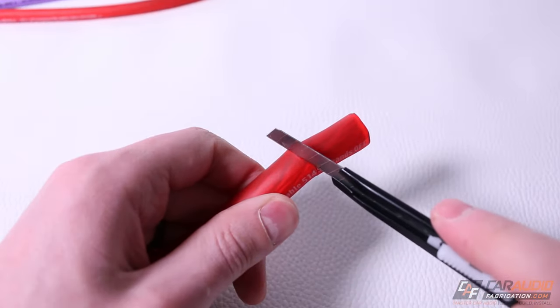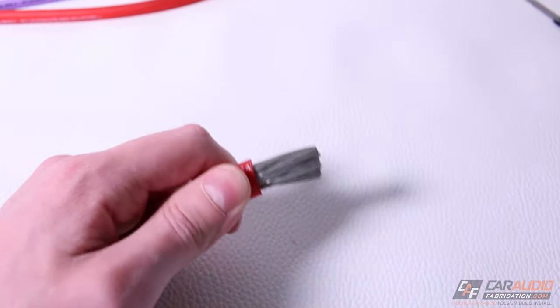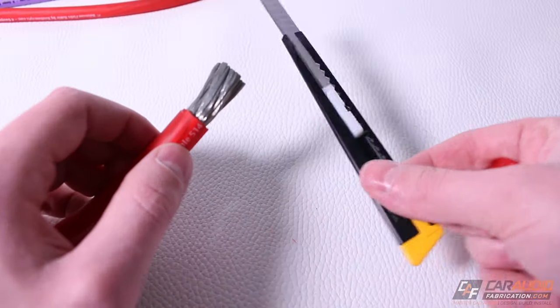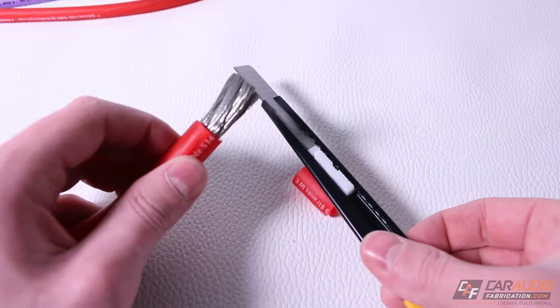You can trim that away, but as we pull it off, it looks something like this. The advantage of using this utility knife is we don't really harm any of the wires, but obviously it's time-consuming.